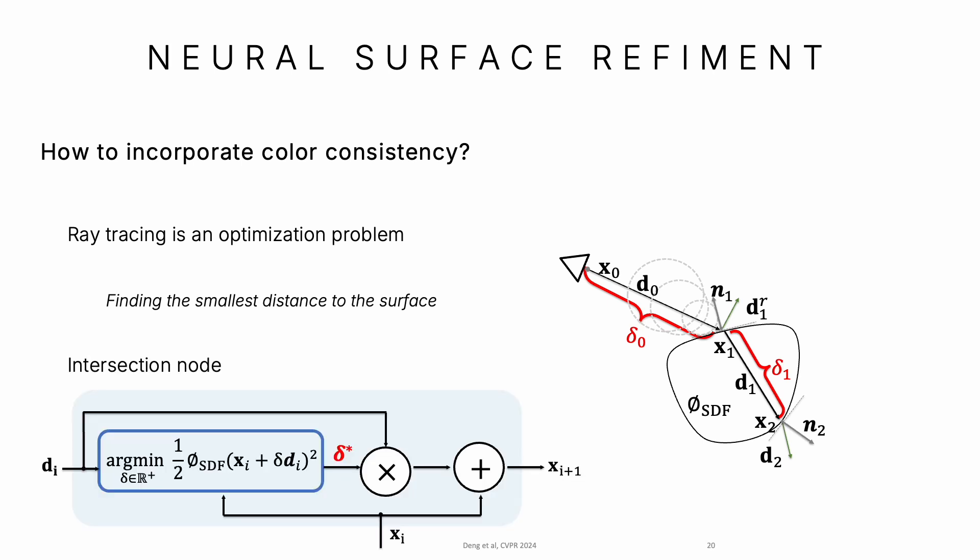Given starting point x_i with direction d_i, the node solves the optimization problem to compute the distance δ. With δ, we know the intersection point x_(i+1).